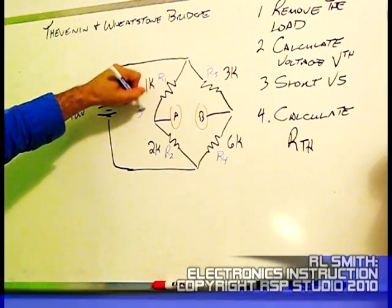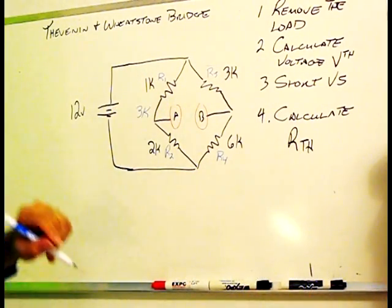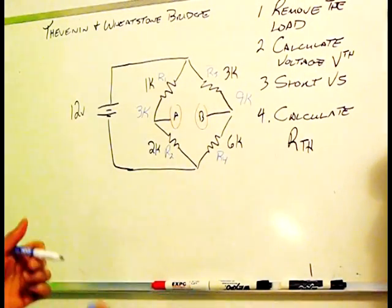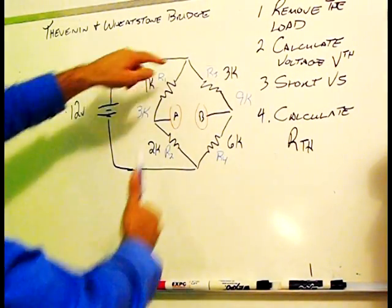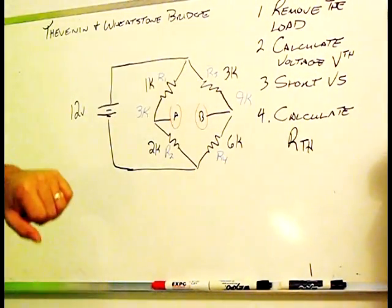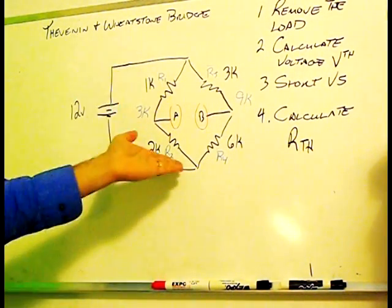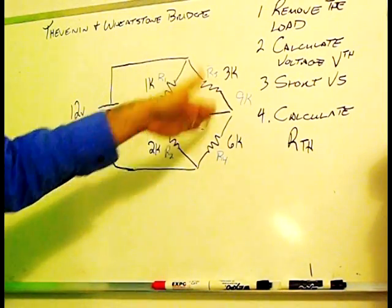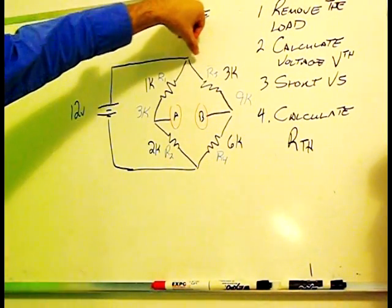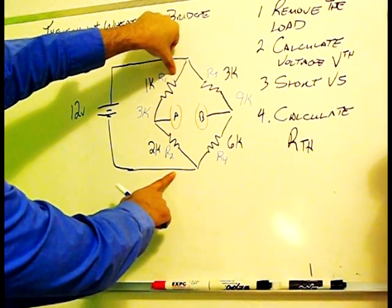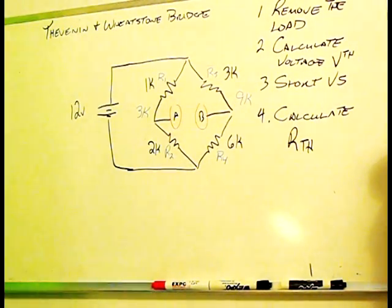It's going to be 3K. And the resistance of this branch is going to be 9K. Now, since both of these branches in their entirety are in parallel with this 12-volt supply, that means that 12 volts is going to be dissipated on each branch. So if you measure from this point to this point, you'll see 12 volts.